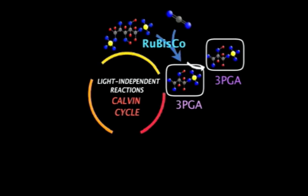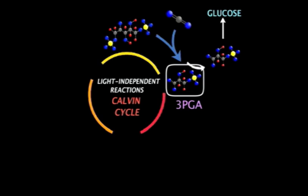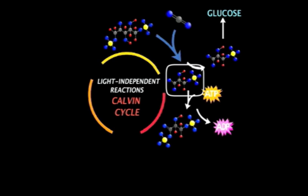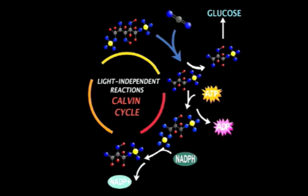After this occurs, one of the 3-PGA molecules exits the cycle and will be used to make glucose and other sugars. The other molecule remains in the cycle. First, it reacts with ATP. Then, the product of this reaction receives a hydrogen atom from NADPH, producing NADP and a new carbohydrate compound known as G3P.